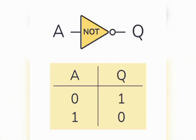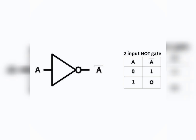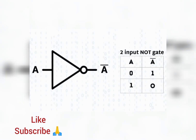Let's talk about one of the basic logic gates — the NOT gate. In digital logic, the NOT gate, which is also called the inverter, is a logic gate that implements logical negation. It outputs the opposite of the bit that is put into it. So if the input is zero, the output will be one. If the input is one, the output will be zero.